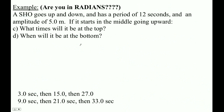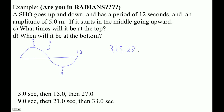Let's go to parts C and D — what times will it be at the top and bottom? Drawing one complete cycle: this is 12 seconds, 6 seconds is the halfway point, 9 seconds is three-quarters, and 3 seconds is one-quarter. It will be at the top at 3 seconds, then every 12 seconds after that: 3, 15, 27, 39, 51. It will be at the bottom at 9 seconds, then 21, 33, 45, 57, et cetera.